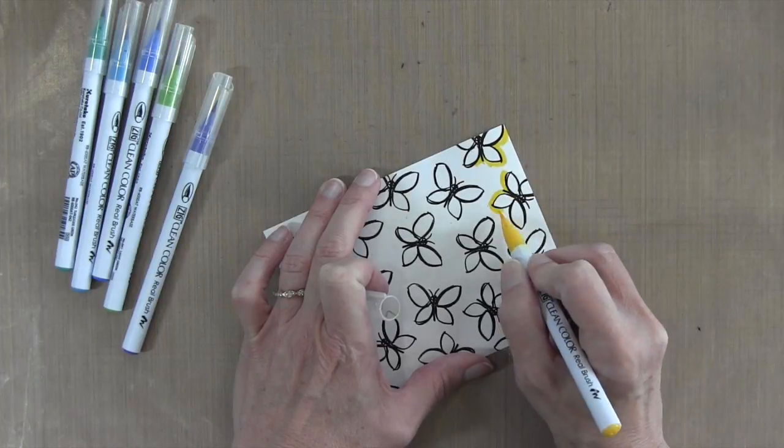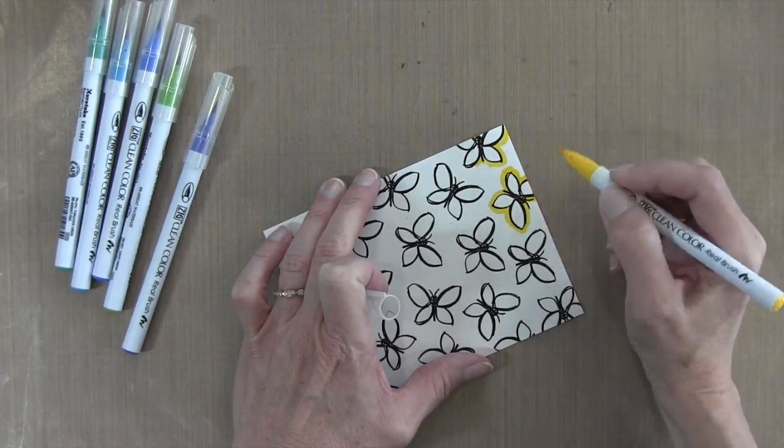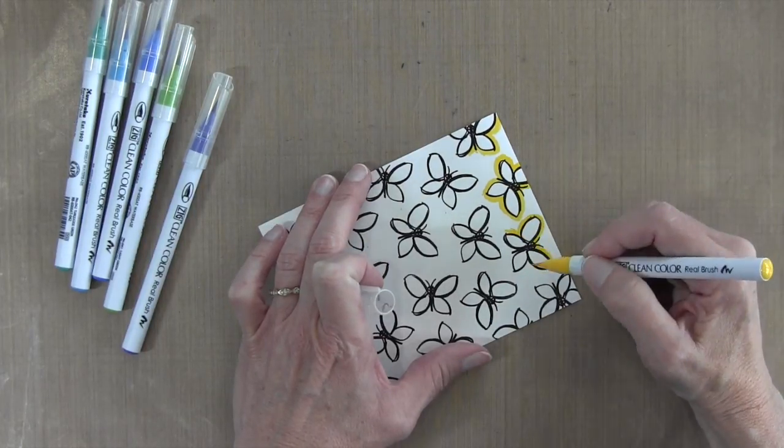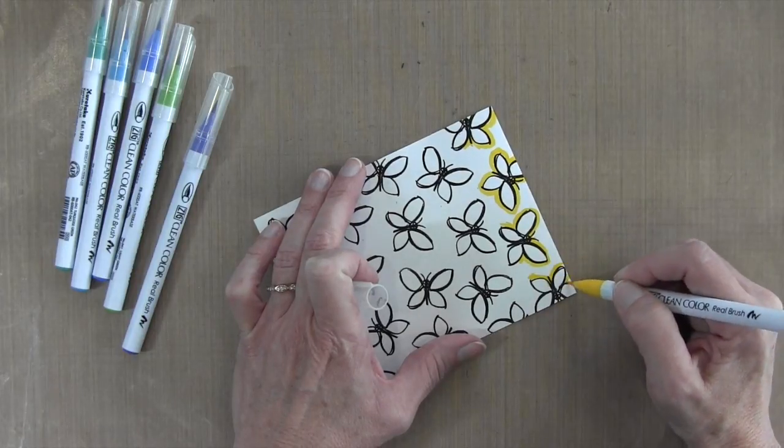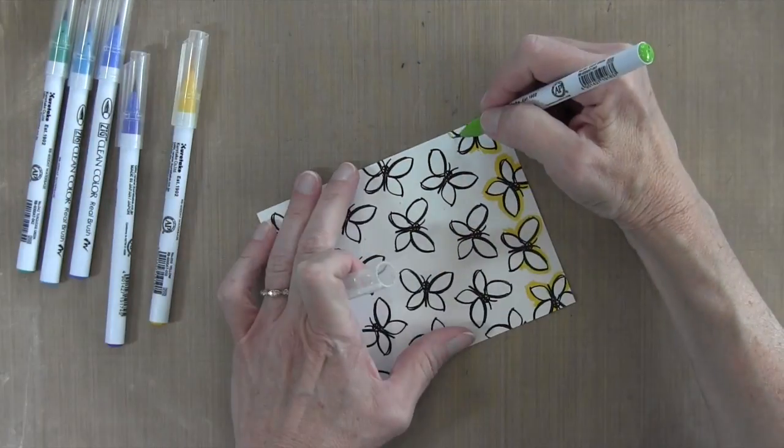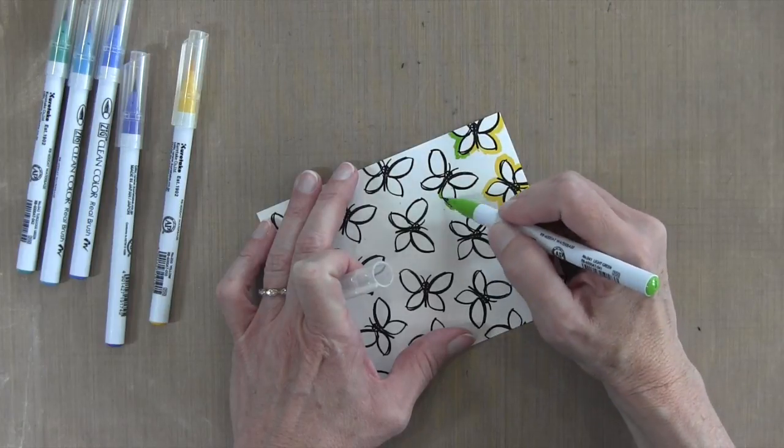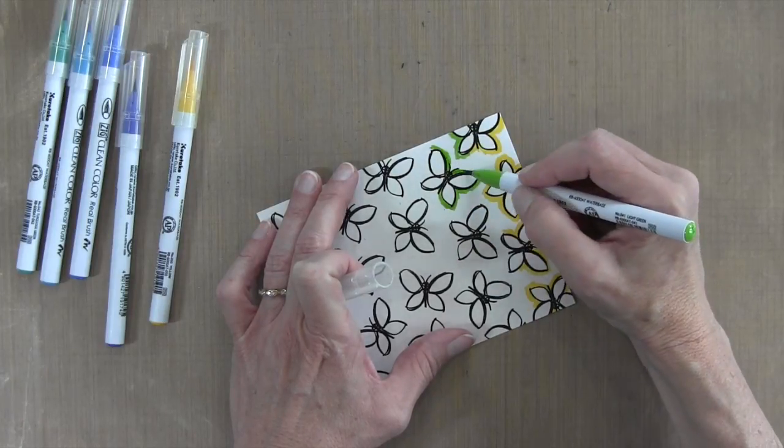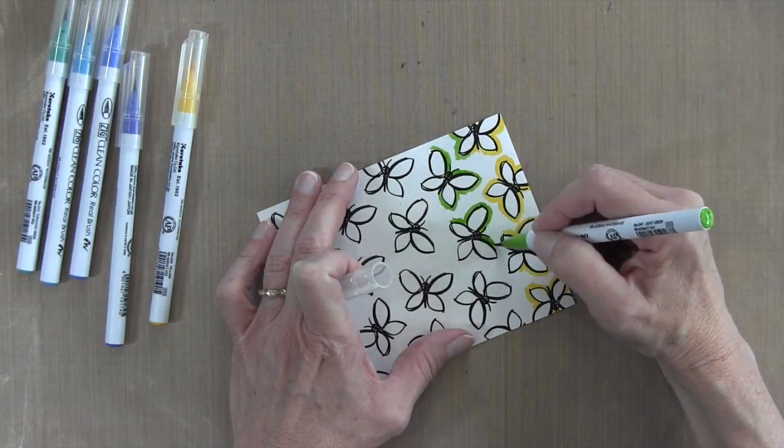I'm going to start with the yellow, and instead of coloring inside the butterflies, I'm going to color outside the butterflies. I'm not being too careful as far as thickness goes. I'm just going to color around each of these butterflies to my pencil mark, being careful not to color inside.